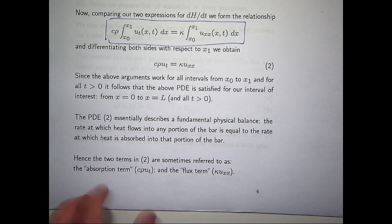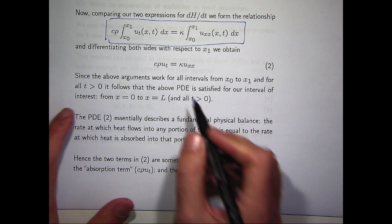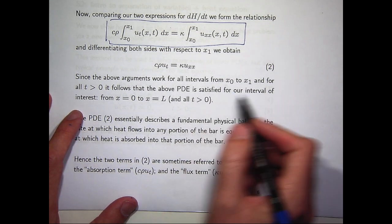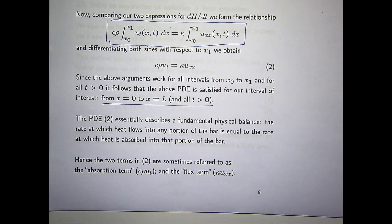So, if I just rearrange those constants, I've actually got this now. Now, since the argument works for all intervals from x0 to x1, and for all t are positive, it follows that the above PDE is satisfied for our interval of interest. In other words, the interval that our bar covers, and also all positive time t.